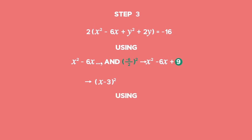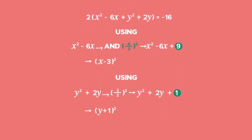Now, using y squared plus 2y, we halve the coefficient of y and square it to get 1. Add 1 to the equation and we have the trinomial y squared plus 2y plus 1. This can be factorised to get y plus 1 all squared.